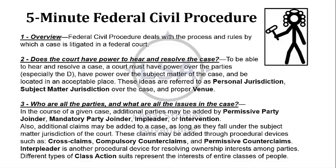Additional claims may be added to a case as long as they fall under the subject matter jurisdiction of the court. These claims may be added through procedural devices such as cross-claims, compulsory counterclaims, and permissive counterclaims. Interpleader is another procedural device for resolving ownership issues among parties. Also, different types of class action suits represent the interests of entire classes of people.